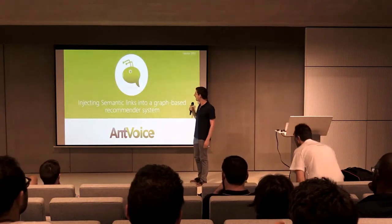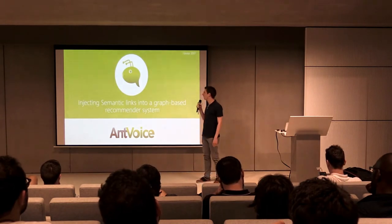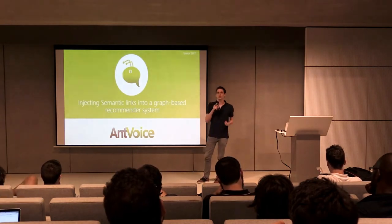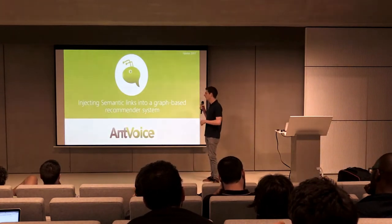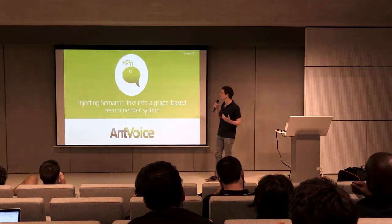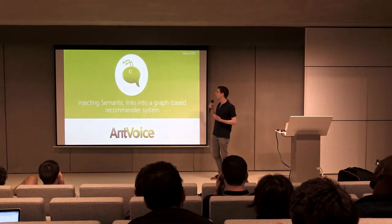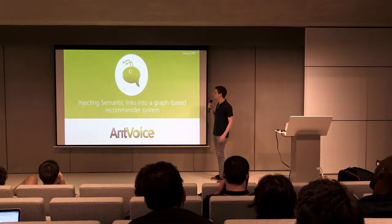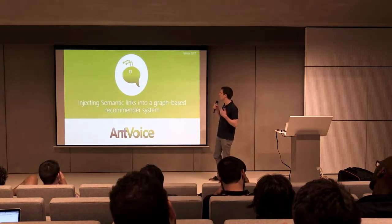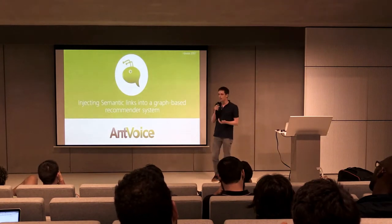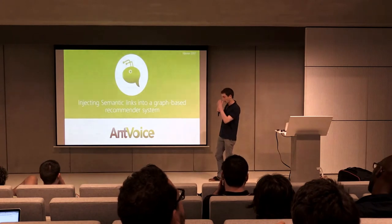Hi everyone, I'm Simon. I work as a data scientist at Envoice. We are making some recommender systems for news media organizations, for e-commerce websites, and even now for advertisers. We use a graph-based recommender system in our technology, and recently we had to inject some semantics into these graphs we use to make recommendations. During my talk, I will explain why we use graph-based recommender systems, why we had to inject some semantic links into them, and how we do it.